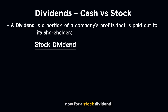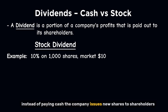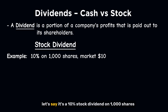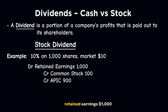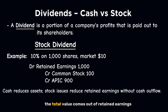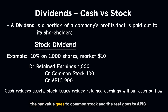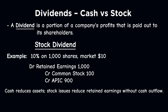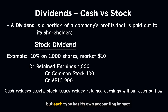Now for a stock dividend: instead of paying cash, the company issues new shares to shareholders. Let's say it's a 10% stock dividend on 1,000 shares and the market price is $10 per share. On the declaration date, debit retained earnings $1,000; credit common stock $100; credit APIC $900. The total value comes out of retained earnings. The par value goes to common stock and the rest goes to APIC — just like when issuing new shares. The company isn't spending cash, but it's still reducing retained earnings.